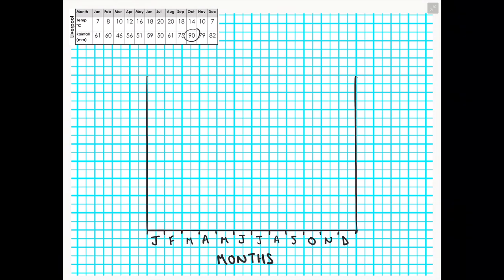We then must consider the left-hand axis, which in this case is for precipitation or rainfall. As you can see on the data on the top of the screen, I have circled the maximum number of rainfall that Liverpool has received. Therefore, I know that my climate graph needs to go up to that maximum number.